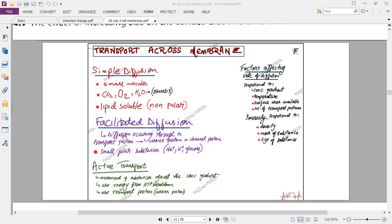Facilitated diffusion is a process which is diffusion down the gradient occurring through transport protein. Transport protein could either be a carrier protein or a channel protein. This is primarily required for small polar substances, for example, sodium ion, potassium ion, glucose. Active transport is a movement of substances against the concentration gradient, and it uses energy from ATP breakdown and uses transport protein, which will be a carrier protein and not a channel protein.